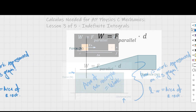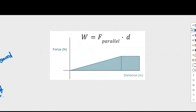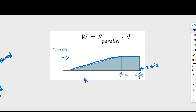If we had a more complex scenario, the principle would still be the same — you'd just need slightly different means of calculating the area. The area of a triangle would be one-half base times height, and the area of a rectangle would be base times height. So what would the work be for this scenario? You would take the area of the triangle and add it to the area of the rectangle, and that would be equal to the work. That's an alternative way of thinking about how to solve for work.